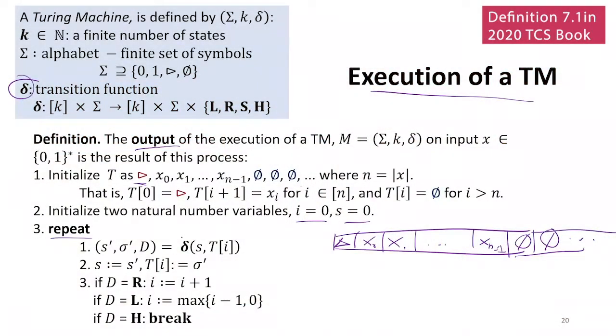At each step we're going to look up in the transition function what s is, which is recording the current state, and s is initialized to zero. So there's a special state zero, which is always the state we start in. Some definitions of Turing machines have an extra parameter which is the initial state, but this definition says we'll always start in state zero. That's nice and simple.